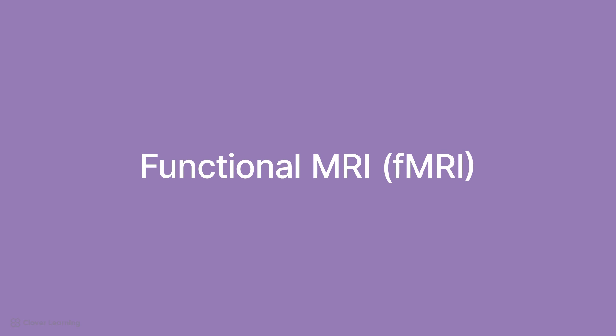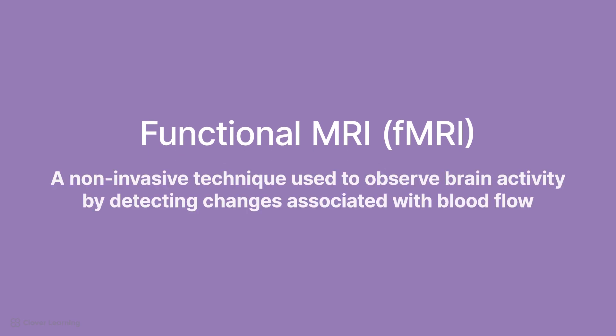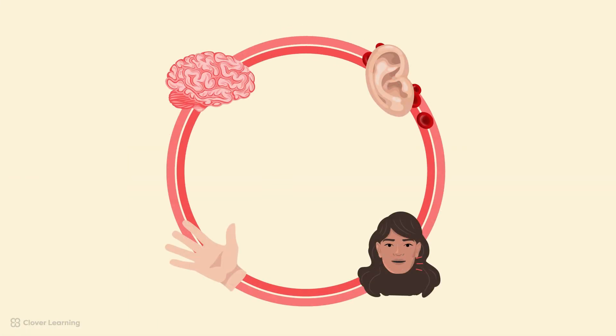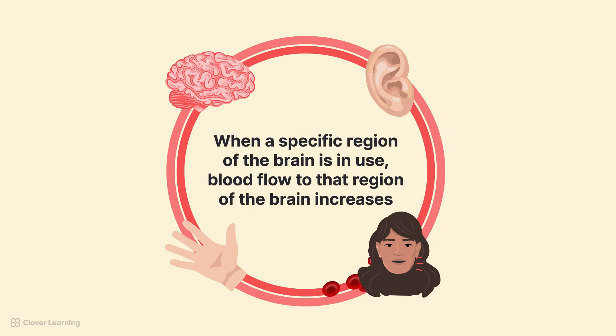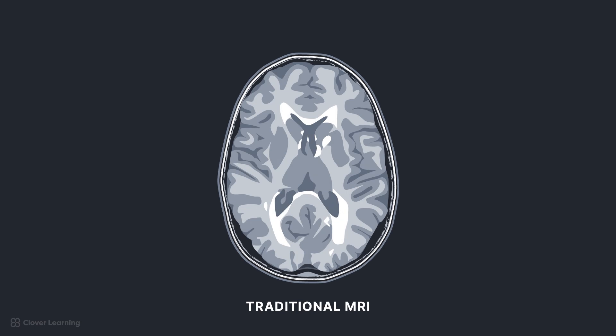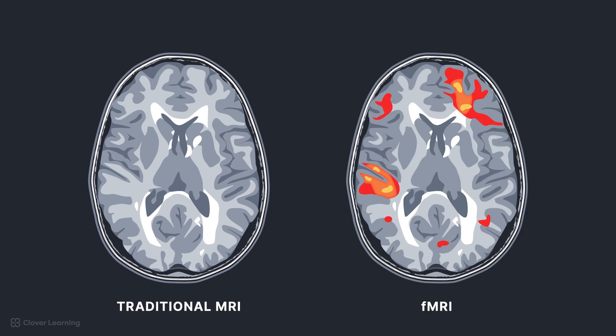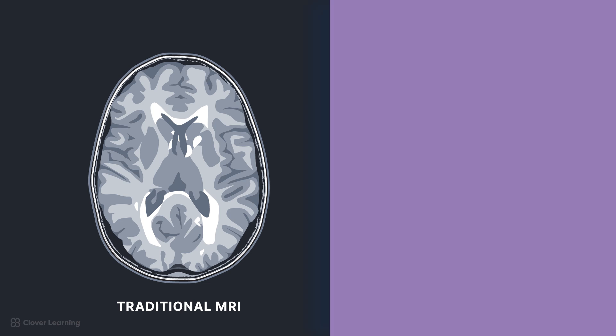Functional MRI, or fMRI, is a non-invasive imaging technique used to observe brain activity by detecting changes associated with blood flow. This method relies on the fact that when an area of the brain is in use, blood flow to that region increases. Unlike traditional structural MRI, which provides detailed images of the structure of the body, fMRI focuses on the function of tissues by measuring blood flow changes related to tissue activity.